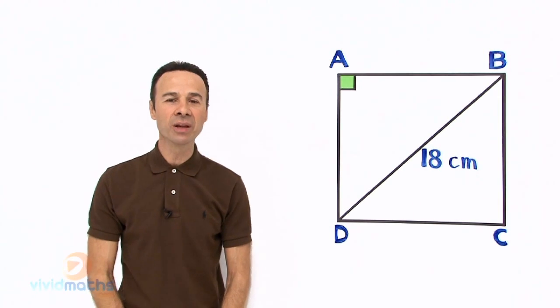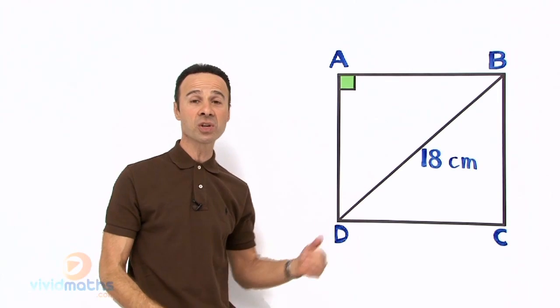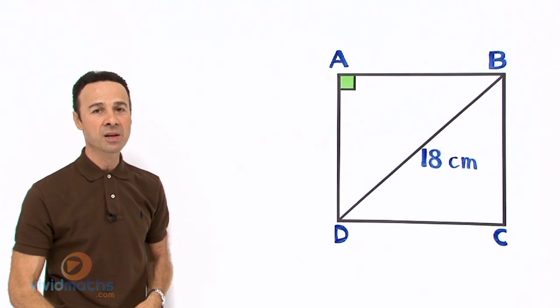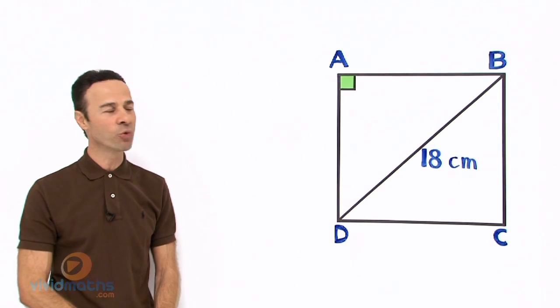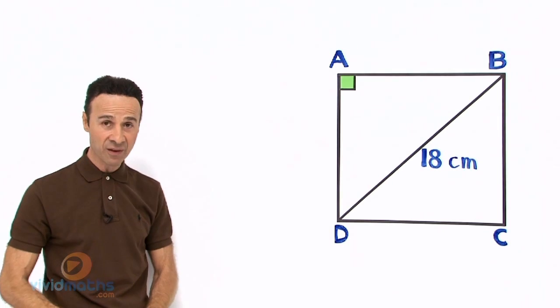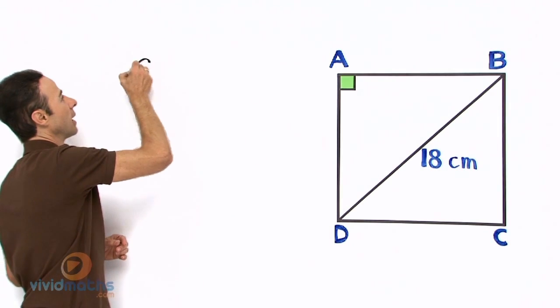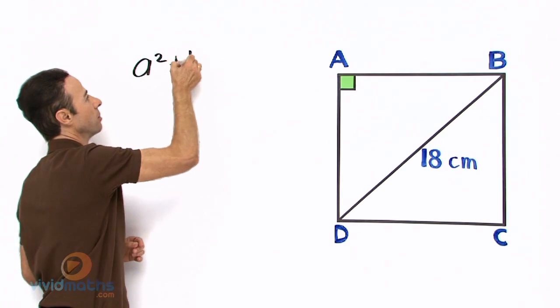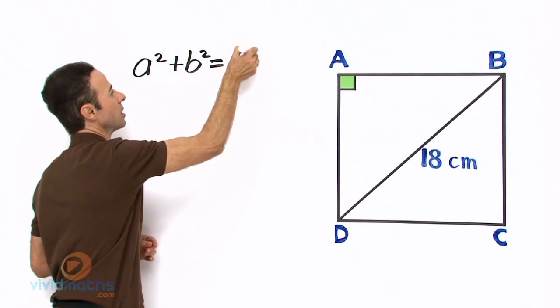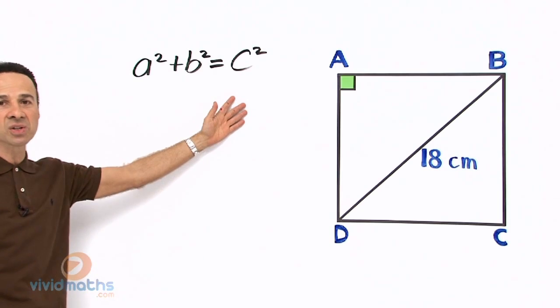Well maybe there is a clue in the question because if you look at the clues in the question then maybe you can do this question. So let's first start off by writing up Pythagoras' equation because that's going to give us a lot of clues. So we know it's a² + b² = c², that's our equation.